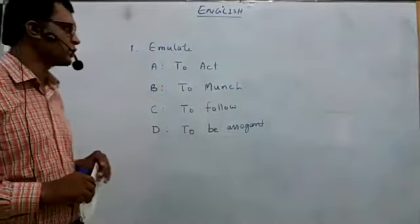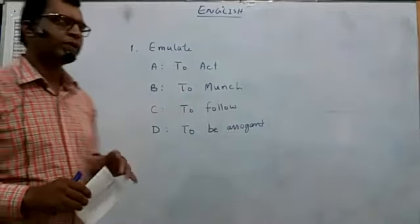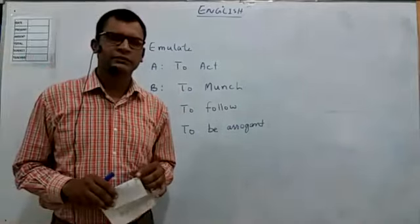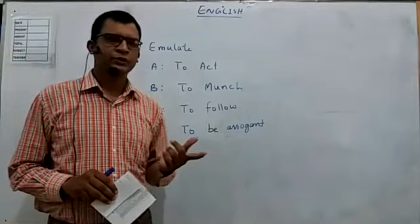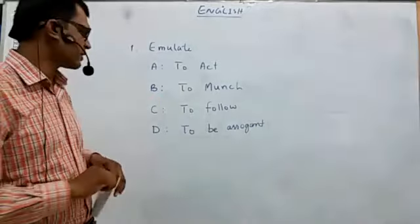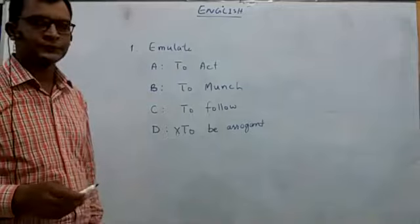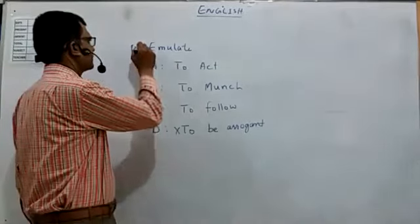Out of these options, to follow and to act are quite similar. Always you will see that there will be one option that will be quite easy to deal with. For instance, like option D is to be arrogant. Okay, emulate is a verb.